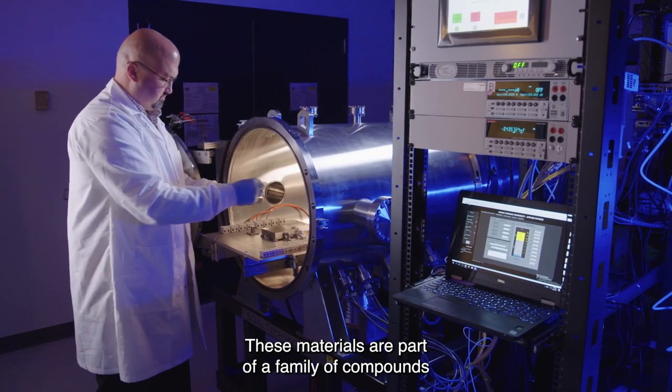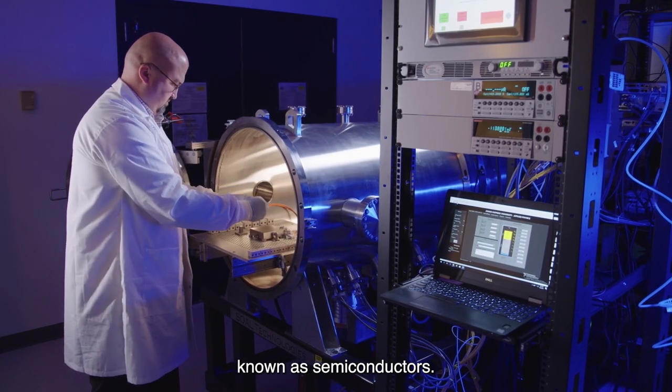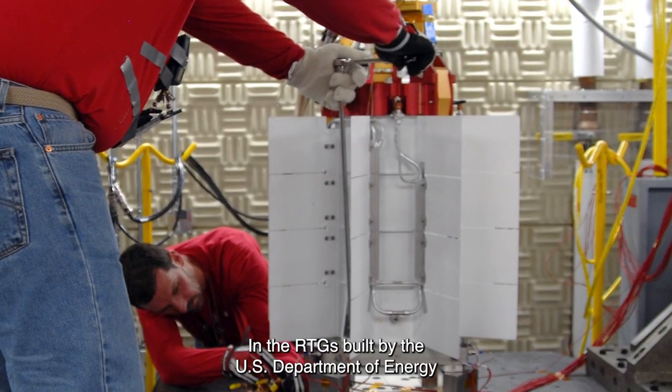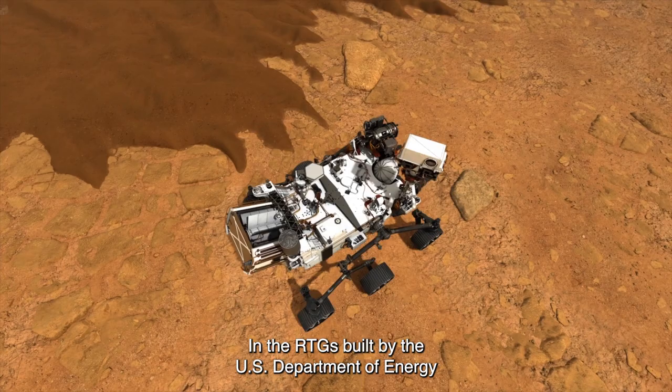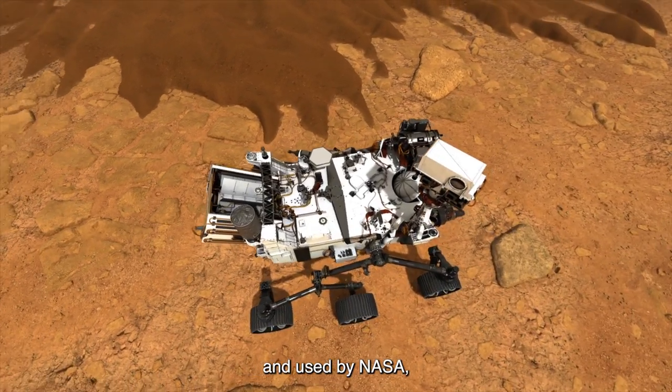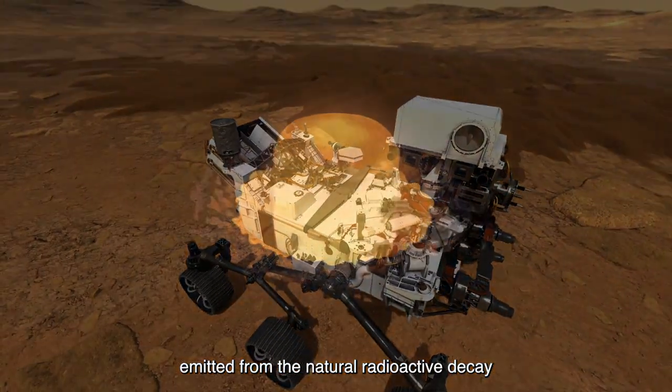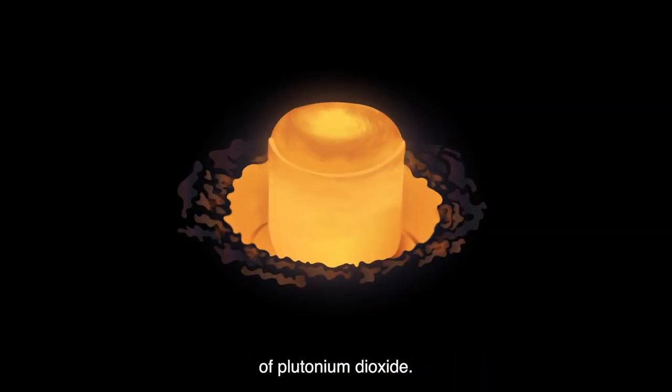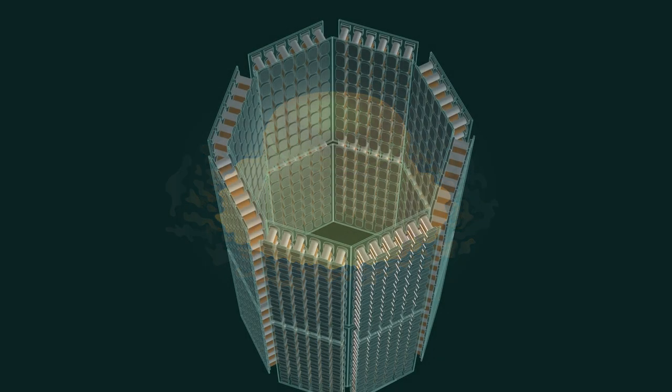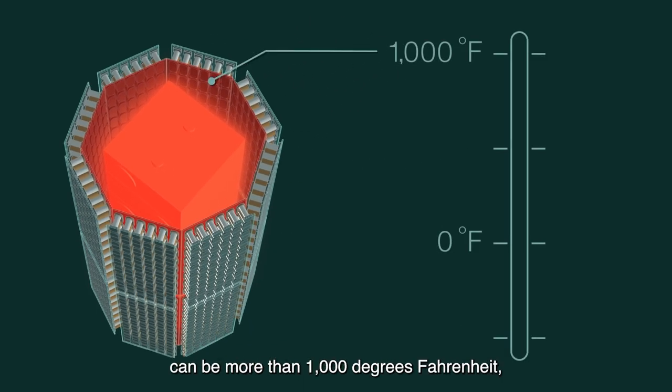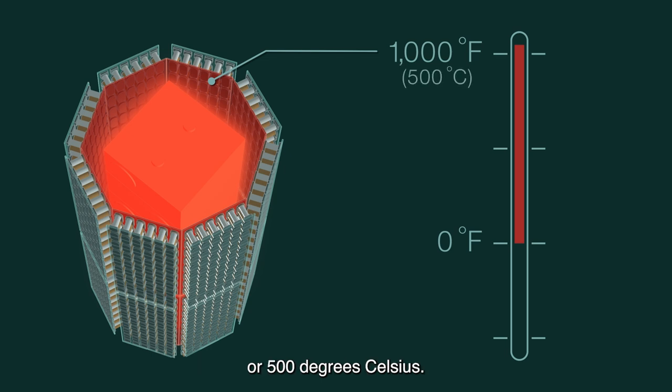These materials are part of a family of compounds known as semiconductors. In the RTGs built by the U.S. Department of Energy and used by NASA, the hot side is provided by the heat energy emitted from the natural radioactive decay of plutonium dioxide. The hot side of the thermocouples can be more than 1,000 degrees Fahrenheit, or 500 degrees Celsius.